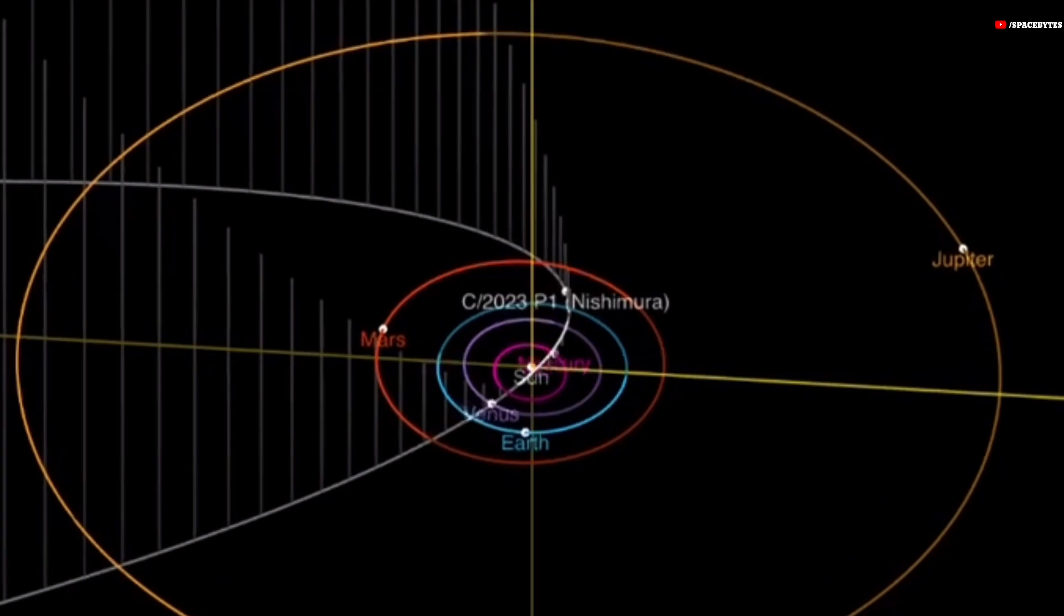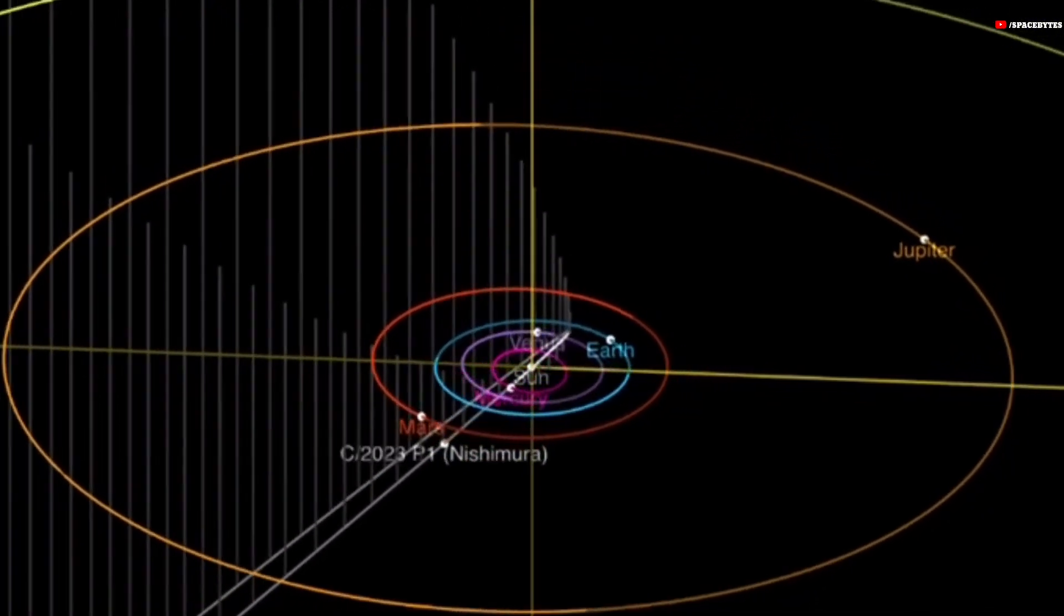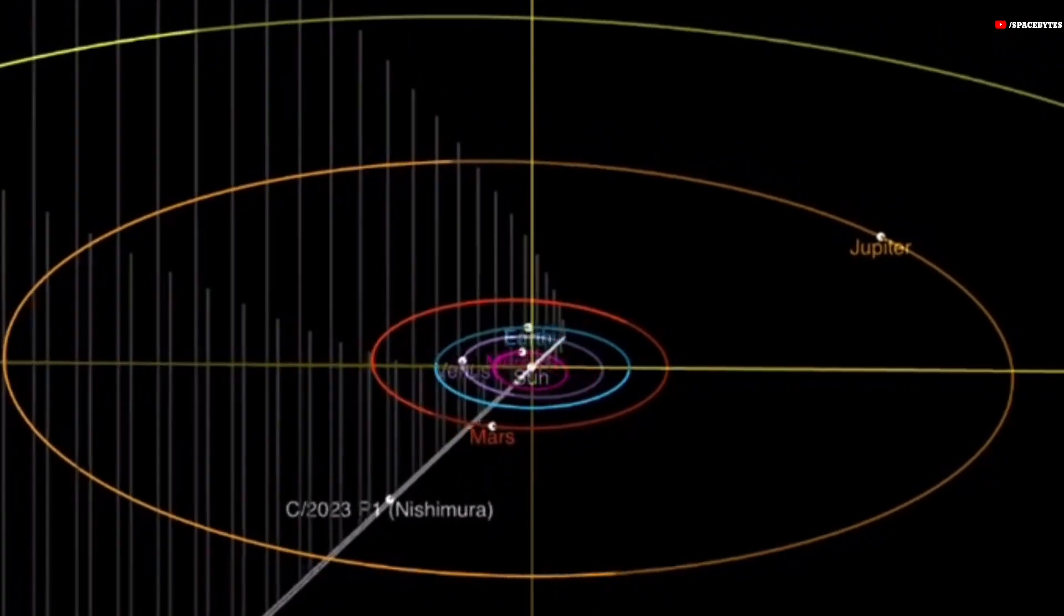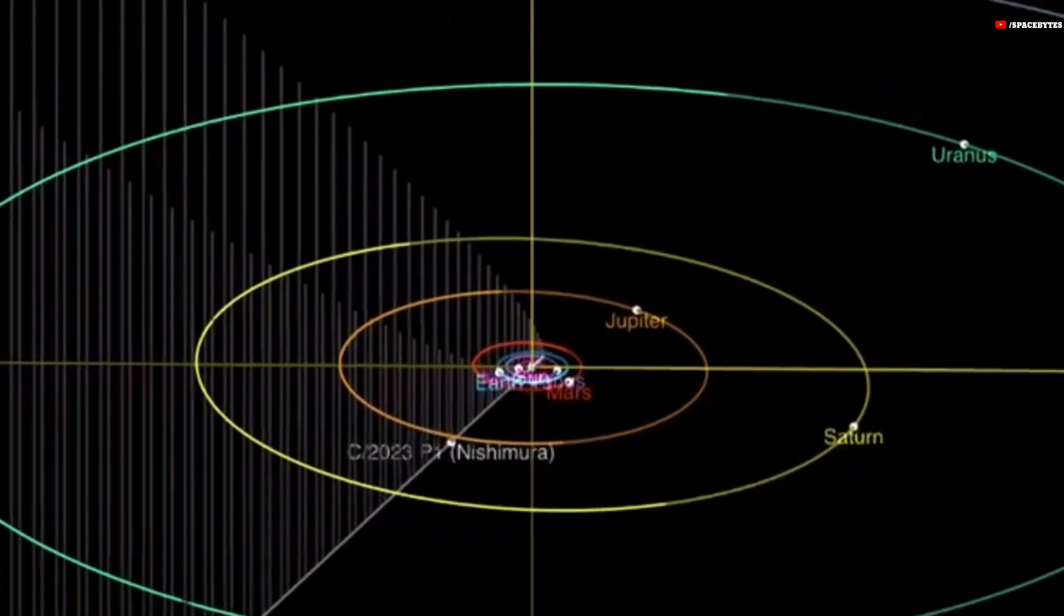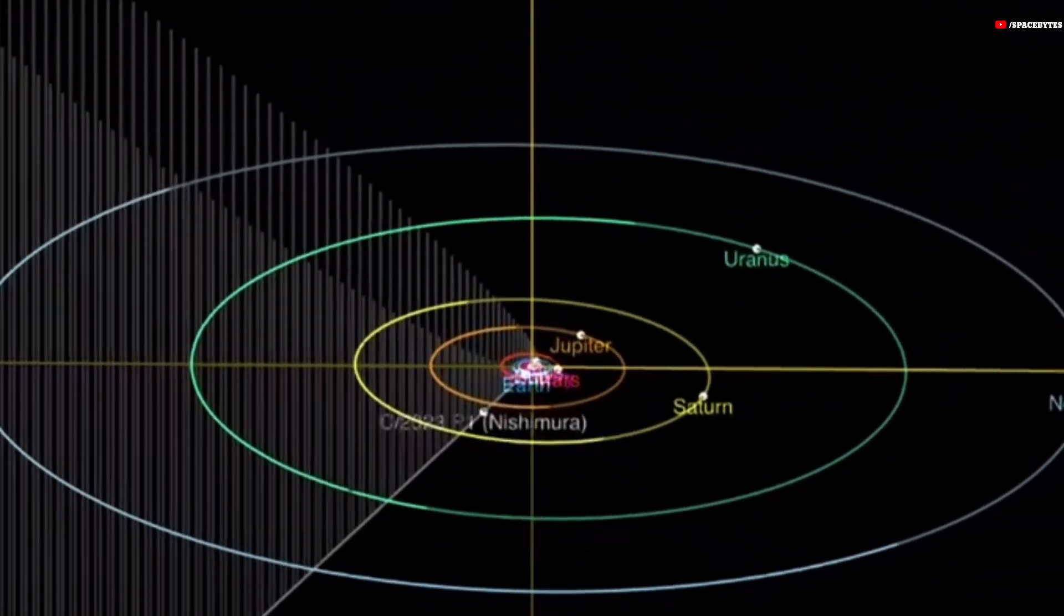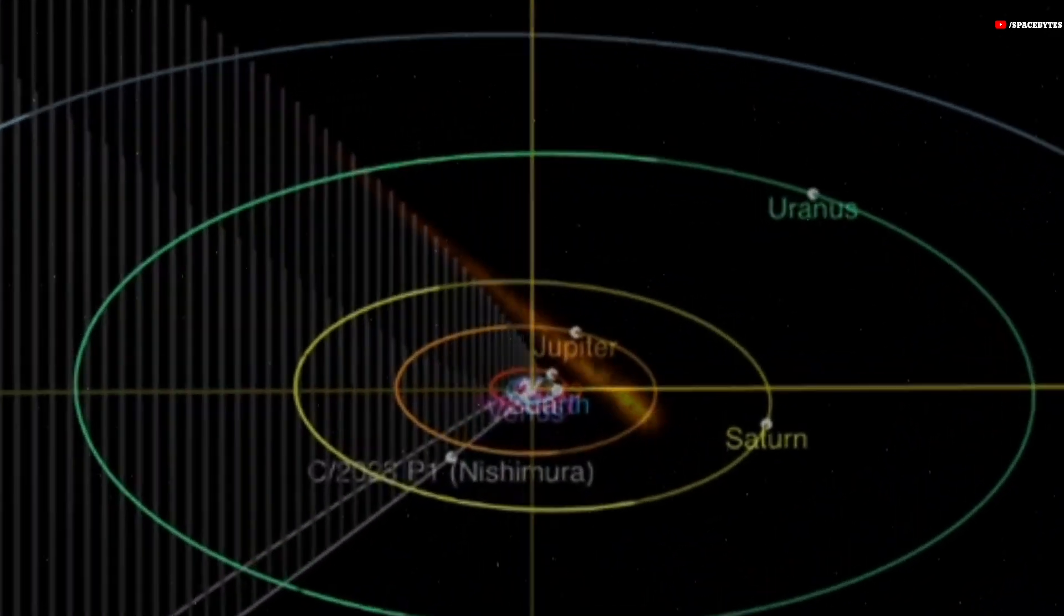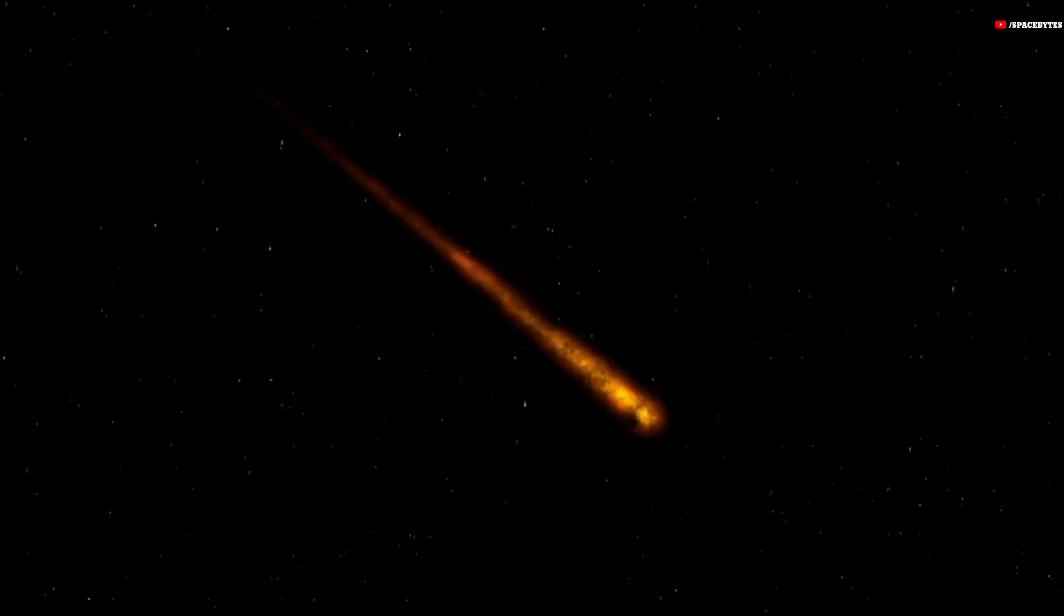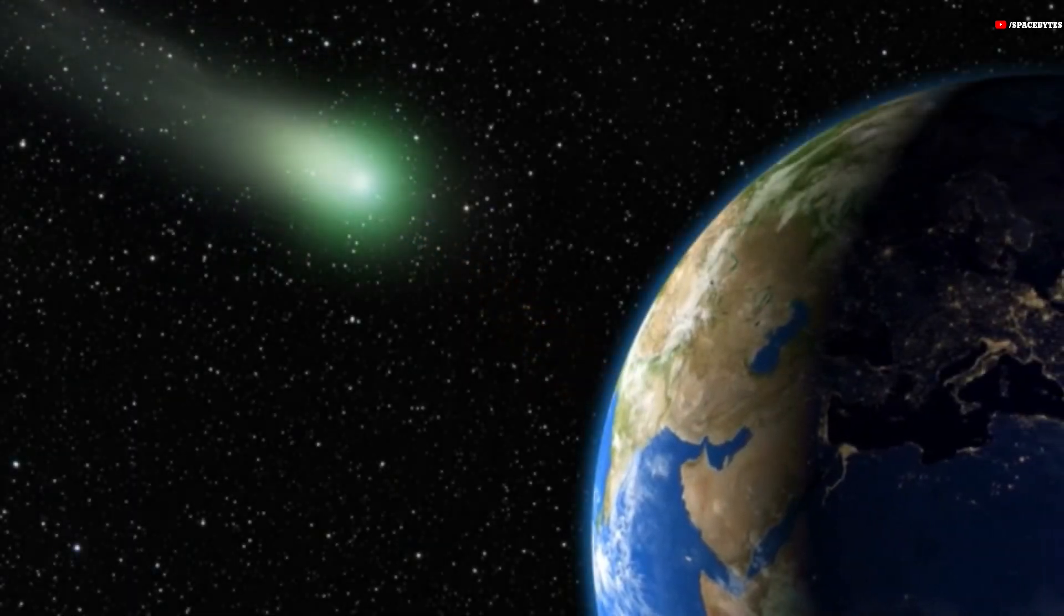Nishimura's astronomical name is C2023P1 because C indicates the fact that it is a non-periodic comet, which means that it originates from the Oort cloud and passes through the solar system only once, or takes 200 to thousands of years to orbit the Sun. This kilometer-sized celestial body will pass Earth safely on September 12, at a distance of over 80 million kilometers.